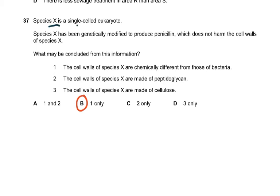Question 37: Species X is a single cell eukaryote. Species X has been genetically modified to produce penicillin which does not harm the cell walls of species X. What may be concluded from this information? The cell walls of species X are chemically different from those of bacteria. The wall of bacteria are made of peptidoglycan and the cell walls of species X are made of cellulose. The answer was B, 1 only.